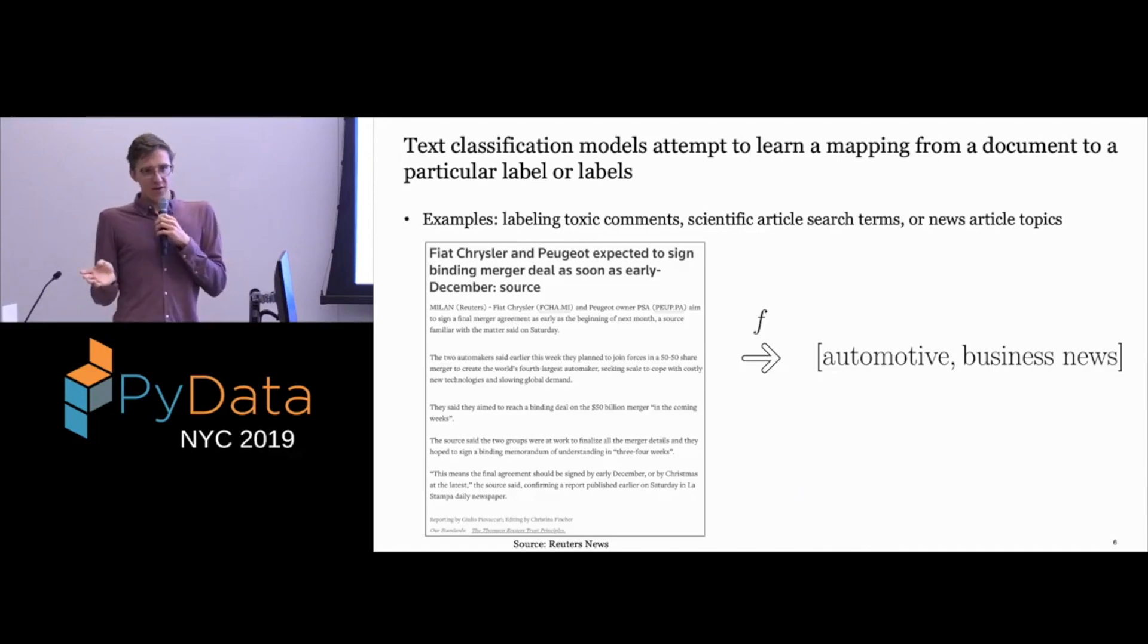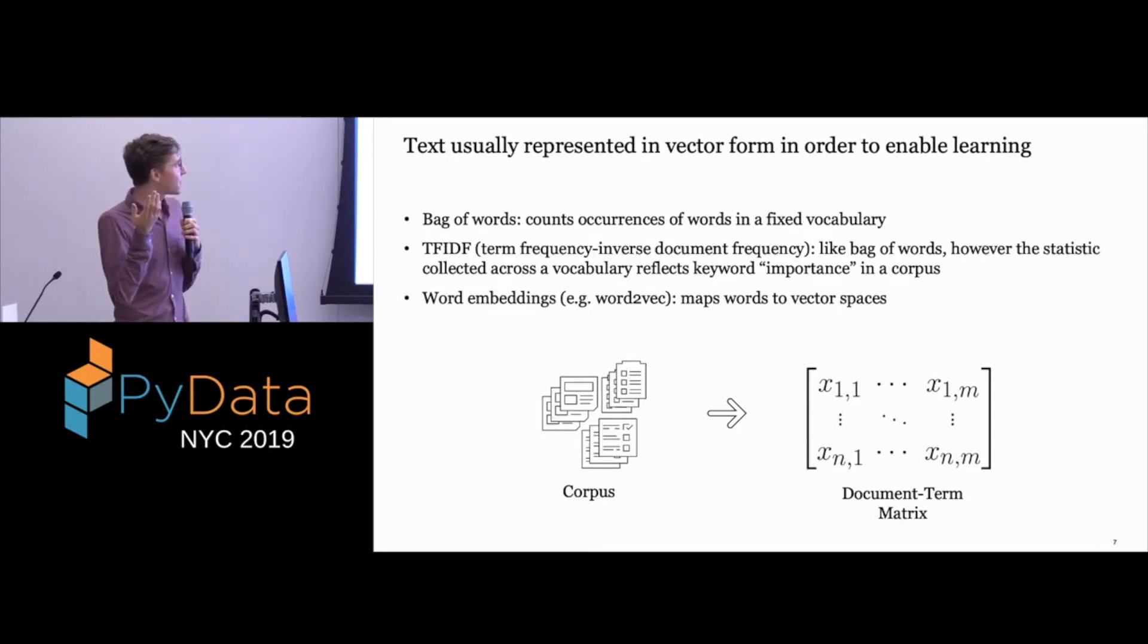But of course, most machine learning models can't just ingest a raw document, so you have to encode them somehow. There are lots of ways to do this. For bag of words, which is the most simple, you just count occurrences of words. TF-IDF is a little more fancy. It's like bag of words, but you get these statistics out that tell you how important a certain word is based off of how often it occurs in a document.